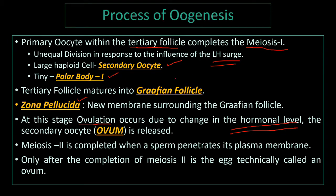Meiosis 2 is completed only when a sperm penetrates the plasma membrane of the secondary oocyte. Until then, only meiosis 1 has been completed. Technically, the cell is called an ovum only after the completion of meiosis 2.